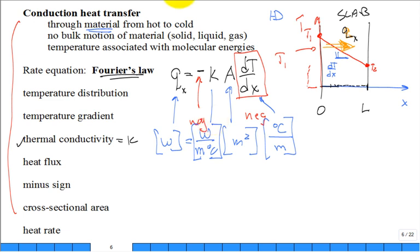Different materials have different thermal conductivities K. I could have a slab of glass, wood, steel, or even a stagnant liquid or gas — but no bulk motion; that becomes convection. So conduction in a fluid means stagnant fluid.